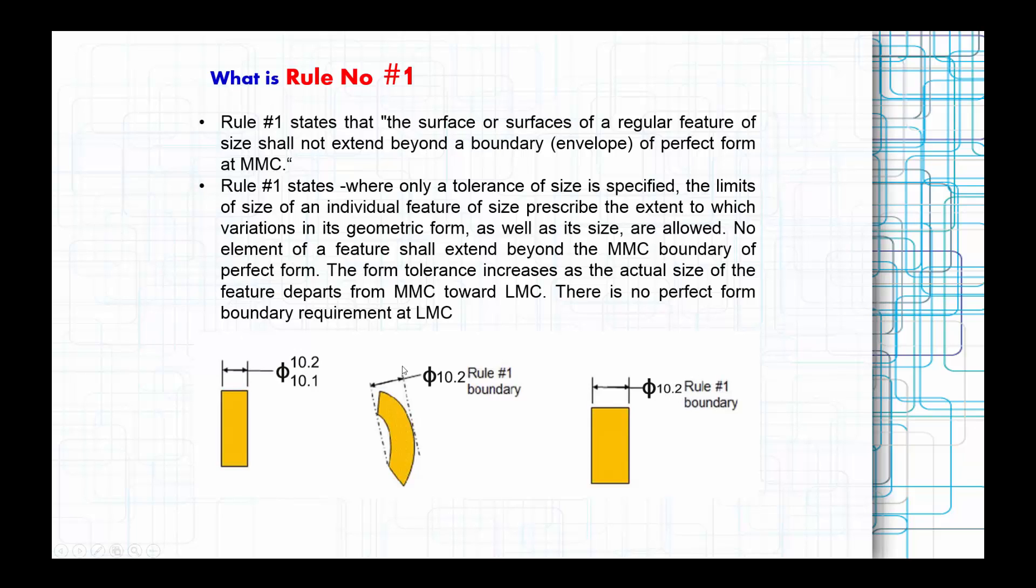If you see these two conditions here, you have one range 10.2 to 10.1, so my variation is 0.1. As far as that 0.1 is concerned, it could bend or bend in maybe any other shape, but still it should fit. That is the primary requirement. You cannot reject if it should fit within this particular condition.